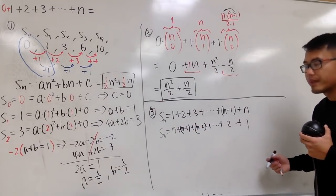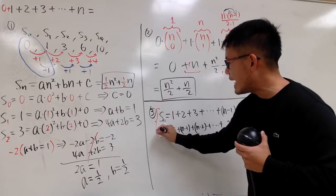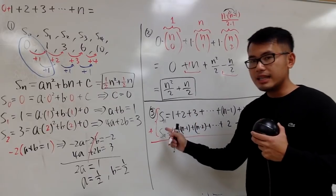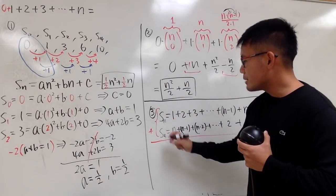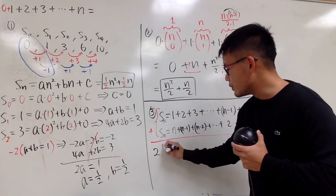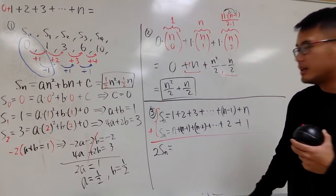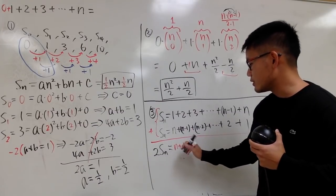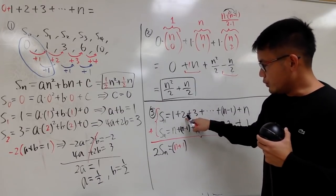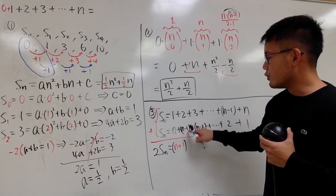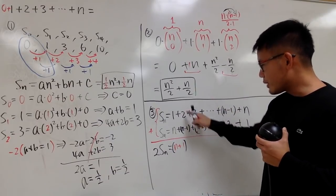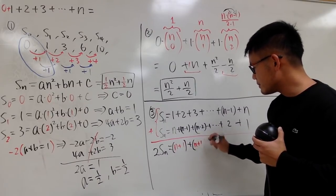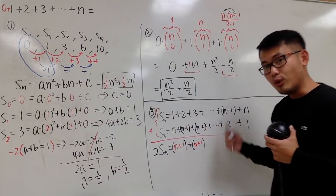The beauty of doing so is: if you add these two equations together, on the left-hand side 1 Sn plus 1 Sn gives 2Sn. On the right, 1 plus n is n plus 1; 2 plus n minus 1 is still n plus 1; and 3 plus n minus 2 is also n plus 1.